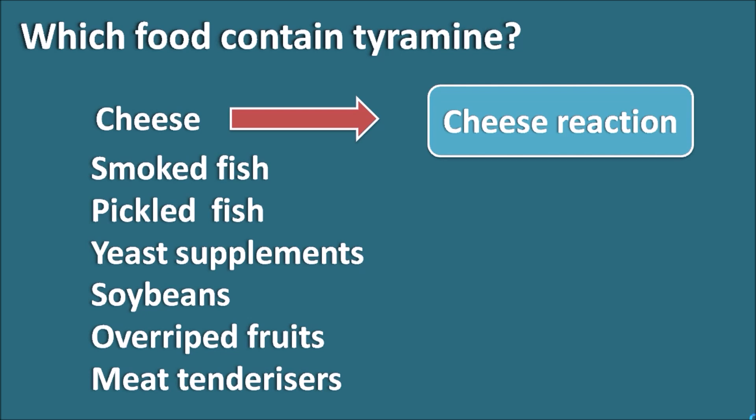In summary, cheese reaction is a food-drug interaction. Whenever food containing tyramine is administered, MAO inhibitors should be carefully given. Cheese reaction is more pronounced with non-selective MAO inhibitors as well as MAO-B inhibitors. We should also check for drugs that have MAO inhibitory activity, such as linezolid, which may also precipitate the cheese reaction.